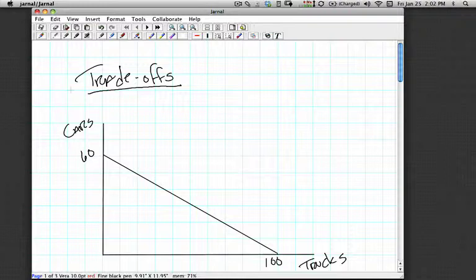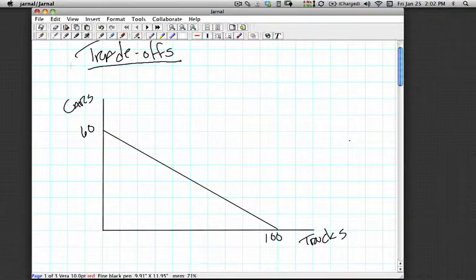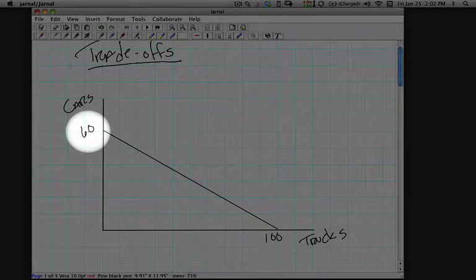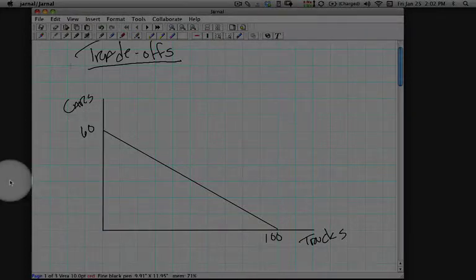And those are the x and y intercepts that we see for this production possibility frontier. Now, in the case of trade-offs, what we're really asking is if the firm was producing all cars, they'd be making 60 cars and zero trucks.